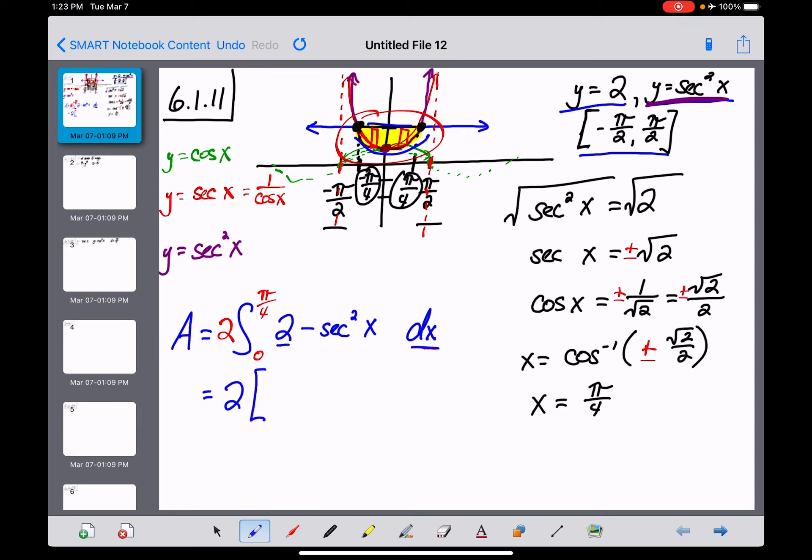Now, 2 anti-differentiated with respect to x is 2x, and minus... here's where I stopped myself. Is secant squared of x the derivative of a function we learned in first semester? Yes, it's the derivative of tangent of x. So I didn't think we could anti-differentiate by hand, but now I changed my mind, and we can. I've got 0 and pi over 4, and let's see what this looks like.